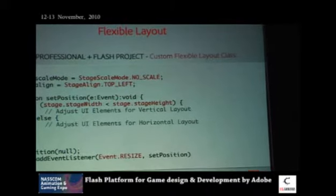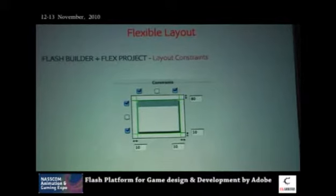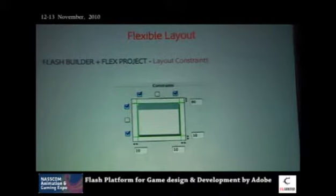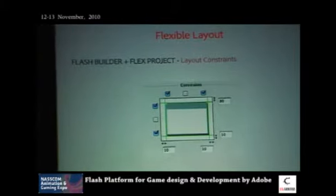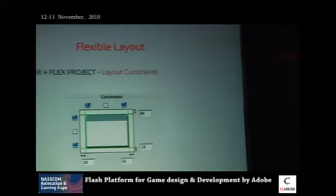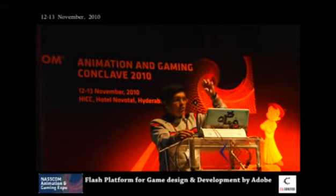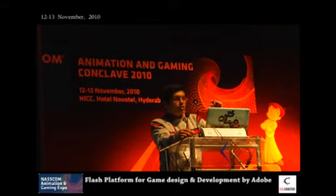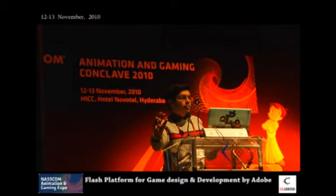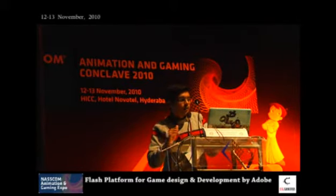Inside that resize function I write code that aligns objects on the stage in either portrait or landscape fashion. For people using Flash Professional that's the optimized way. For Flex-based games, Flex has something called constraints — already implemented in ActionScript — where you use simple APIs like left equals 10, top equals 5 in your MXML. So if you create a game with a button on the bottom right and set right equals 10 and bottom equals 10, no matter the screen size, the button always stays in the bottom right corner.